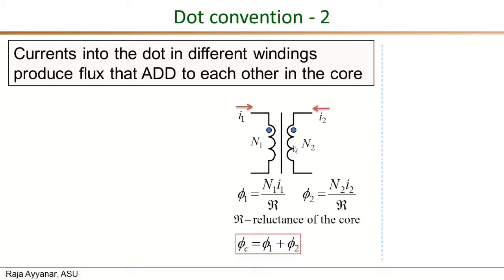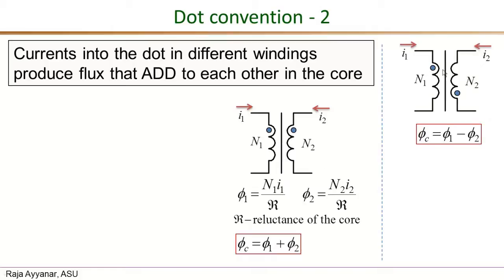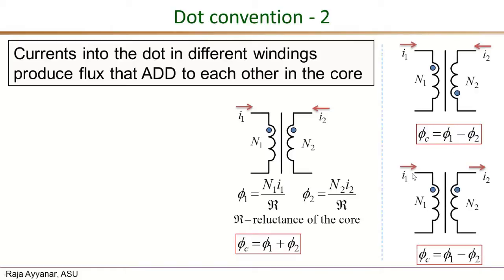A different case is when on the primary side the current enters the dot, but on the secondary side the current is actually leaving the dot — that is, the current is entering the undotted end. In this case, Φ₁ and Φ₂ individually are still given by the same equation, mmf over reluctance. However, looking at any leg of the core, the net flux is the difference: Φ_C equals Φ₁ minus Φ₂.